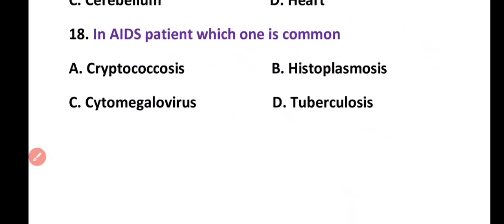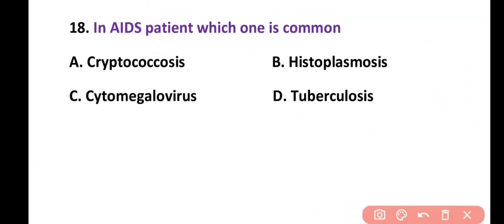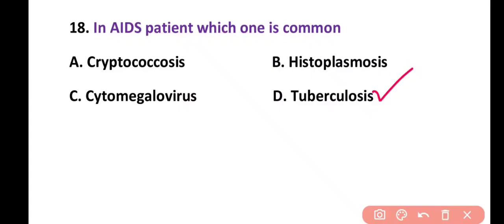Question 18. In AIDS patients, which one is most common: cryptococcosis, histoplasmosis, cytomegalovirus, or tuberculosis? Correct answer is option D. Tuberculosis is the most common infection reported in AIDS patients.